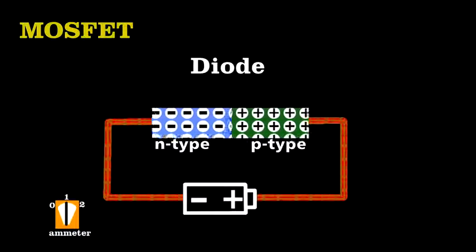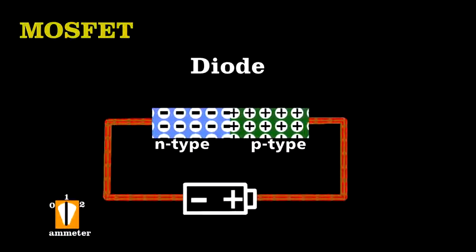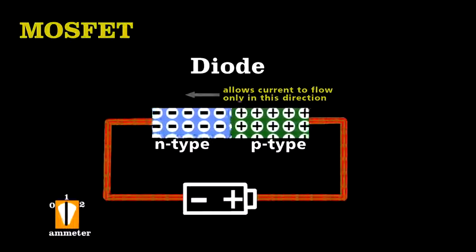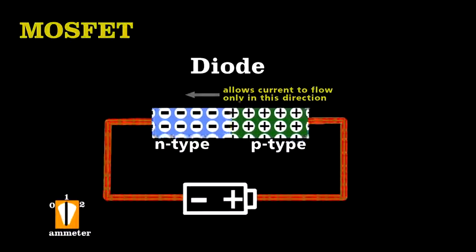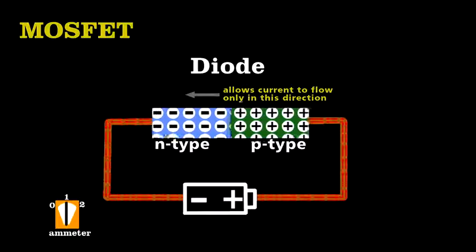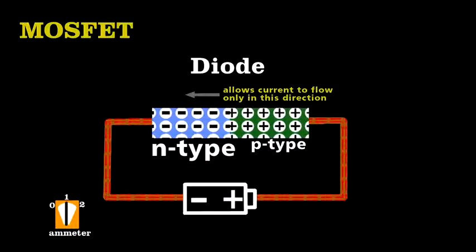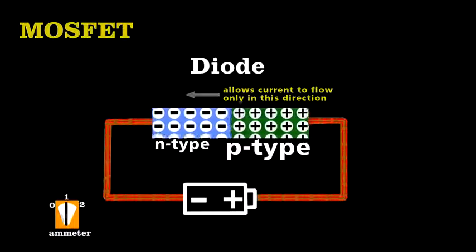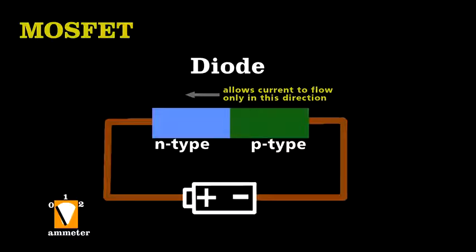Like every transistor, its operation depends on being able to make diodes from semiconductors. Recall that a diode allows current to pass in only one direction, because it uses two types of semiconductors. A type that uses negative charge carriers, and one that uses positive charge carriers. Flip that battery, and the flow of charge stops.